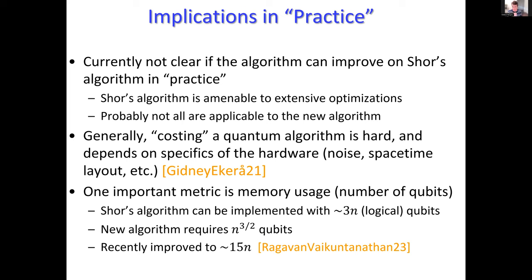Once you know the period is 984, you're done via basic number theory. If the period of 4 is 984, then 4^984 ≡ 1 (mod 8051). Since 4 = 2², we know 2^984 is a square root of 1 mod 8051. In this case that's 1163. So 1163² ≡ 1 (mod 8051), which means 8051 divides (1163−1)(1163+1). Running GCD on 1162 and 851 gives 83, and 851 = 83 × 97.